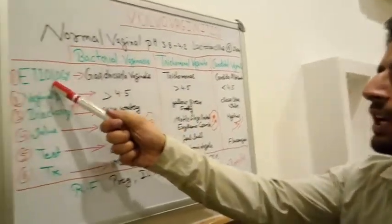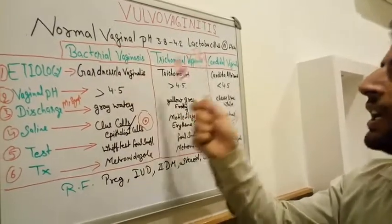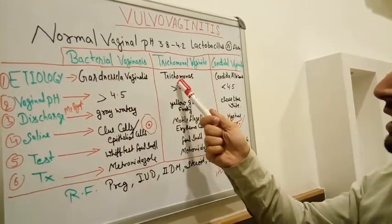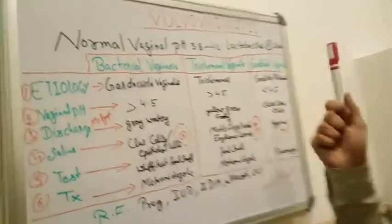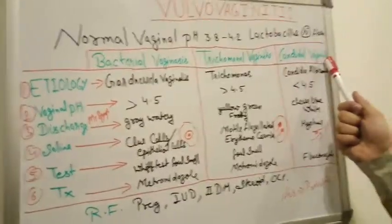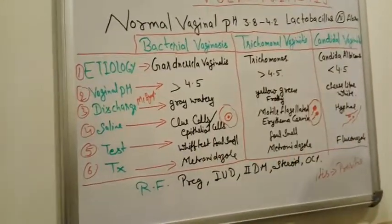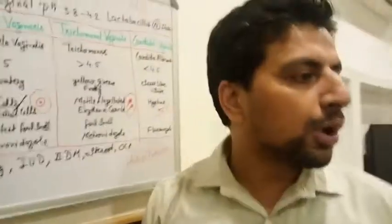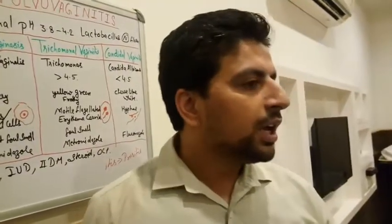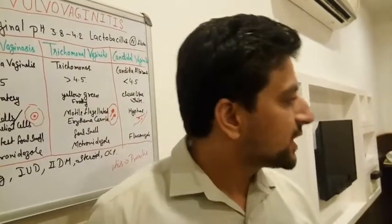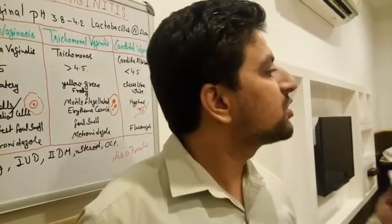In bacterial vaginosis the etiological agent is Gardnerella vaginalis. In trichomonal vaginitis the causative agent is Trichomonas vaginalis. In candidal vaginitis the causative agent is Candida albicans.